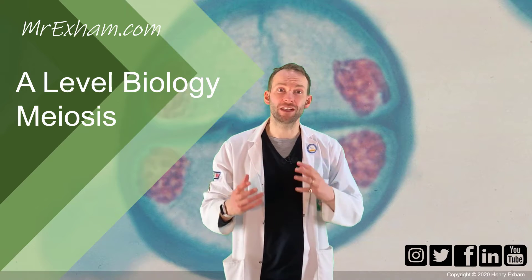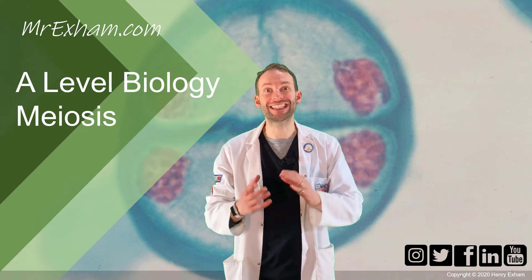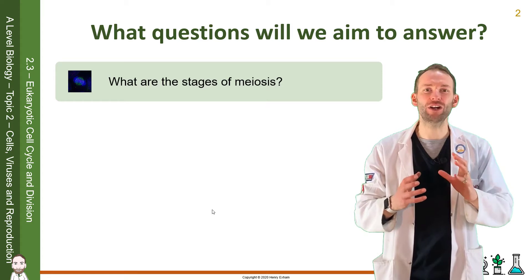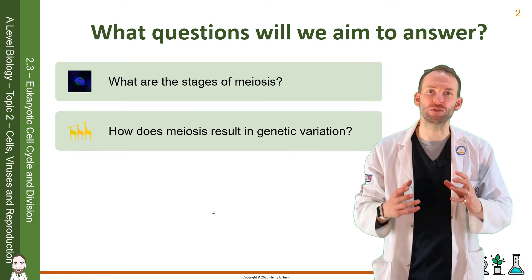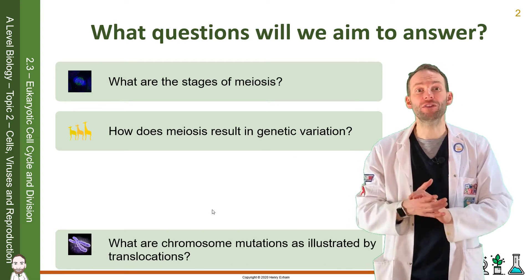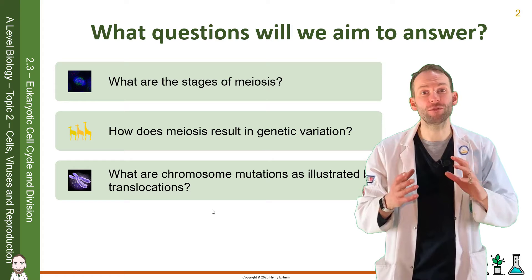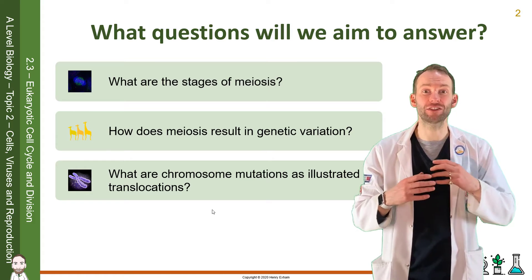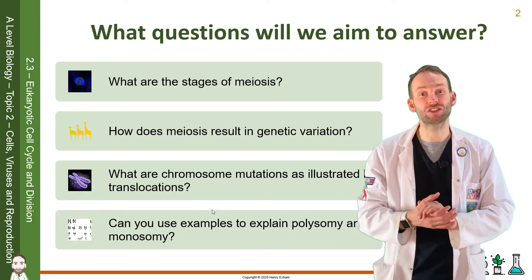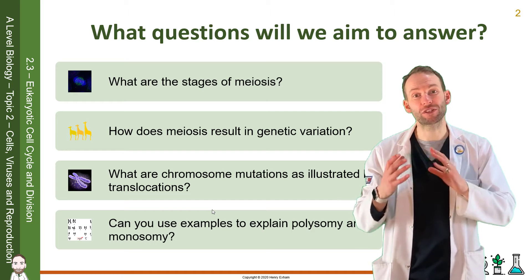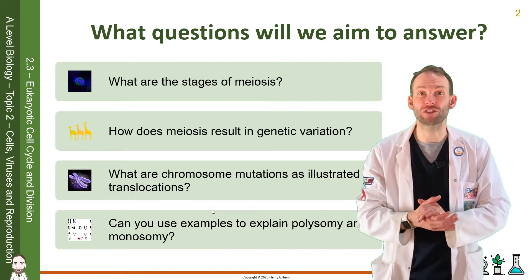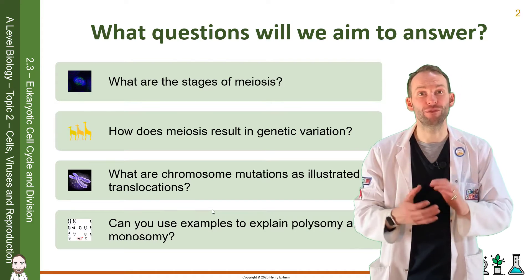In this lesson, we're going to look at the different stages of meiosis, and we're also going to look at how meiosis results in genetic variation. Then we'll go on to look at what chromosome mutations are and how they're illustrated by translocations, and we'll look at some examples of polysomy and monosomy mutations.